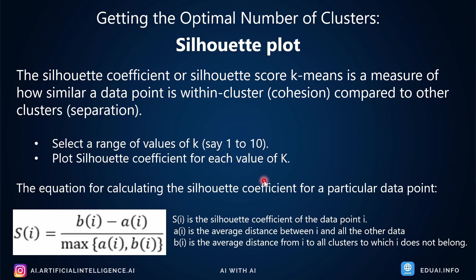This is just the other method. We also call silhouette as silhouette coefficient or silhouette score. K-means is a measure of how similar a data point is within cluster, or cohesion, compared to the clusters. Basically, it just looks for the data points which are nearer to each other. Are they cohesive? Are they encapsulated? Are they related to each other, by doing some calculations? There is a formula to calculate the silhouette coefficient which you see here. I'm not going to talk about this as it's not really important.